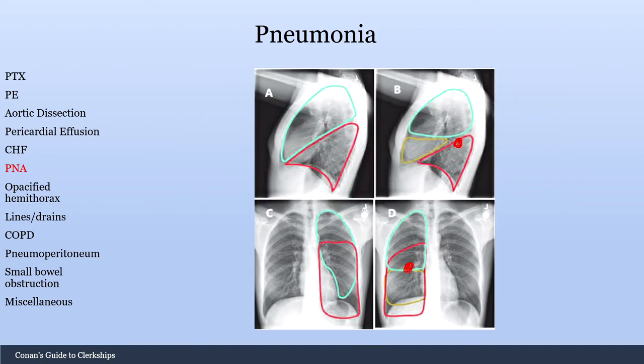This is really important because on the left lung, a density all the way down could be in the lingula or the inferior part of the upper lobe — not necessarily a lower lobe pneumonia. A density could be a lower lobe or an upper lobe pneumonia. You need that lateral X-ray to figure out where the pneumonia truly is.